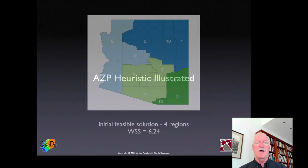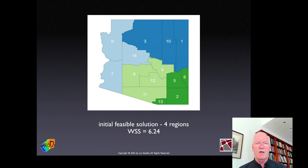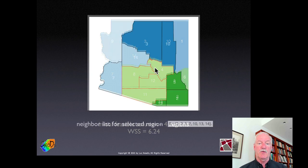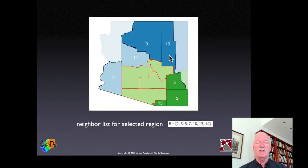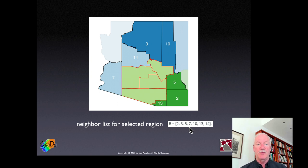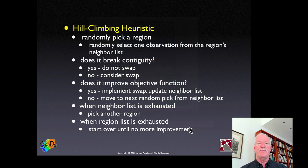Let me illustrate with our Arizona example. We start with a feasible solution—say p equals four regions. We randomly pick one of those four regions, here the light green one, and make a list of all its neighbors. Then we systematically and randomly pick one from this list until it's exhausted, potentially adding new neighbors as we make improvements to the region.